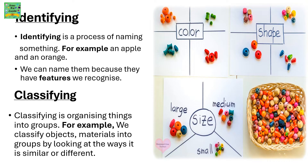Identifying. Identifying is a process of naming something. For example, an apple and an orange — we can name them because they have features we recognize. We can differentiate between an apple and an orange.